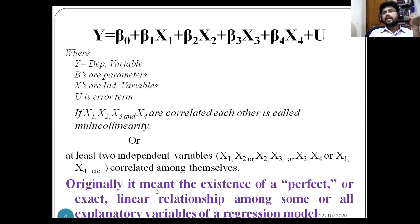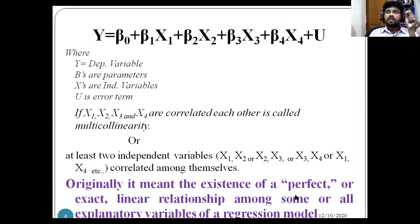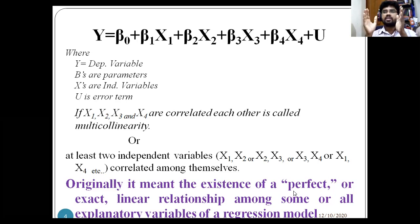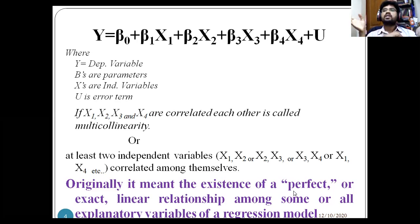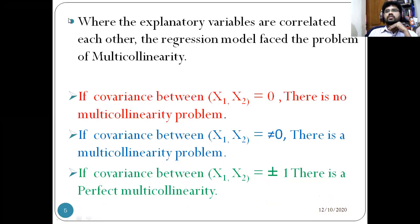Originally, multicollinearity meant the existence of a perfect, exact, or linear relationship among some or all explanatory variables in a regression model. When we get a serious problem of multicollinearity, it means there is an exact or perfect linear relationship between the independent variables. When running a correlation between two independent variables, if r equals one, there is a perfect correlation between x₁ and x₂. When we get r equal to one between two independent variables, that is called multicollinearity.